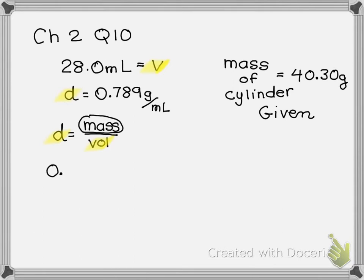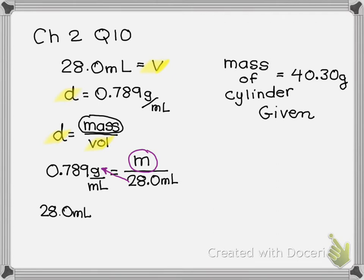So 0.789 grams per milliliter, that's the density, would equal the mass. I'm just going to write M for mass, that's what I'm solving for, divided by 28.0 milliliters. So to solve for my unknown here, mass, I'm going to multiply the 28 over to the other side, like cross-multiplying. So then I would have 28.0 milliliters times 0.789 grams per milliliter. That's going to equal my mass.